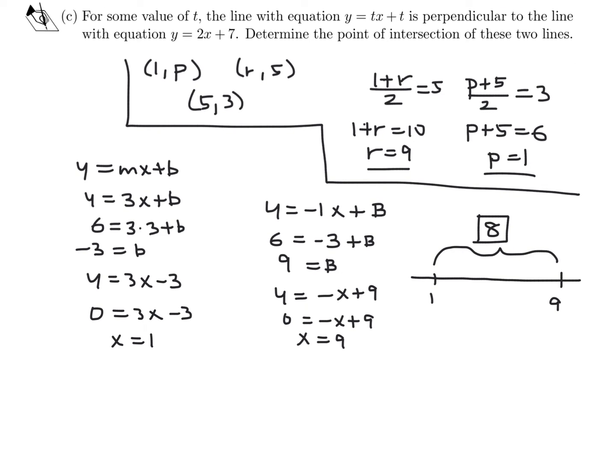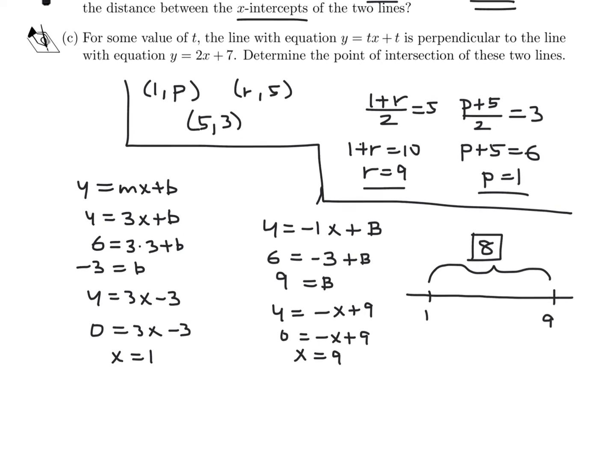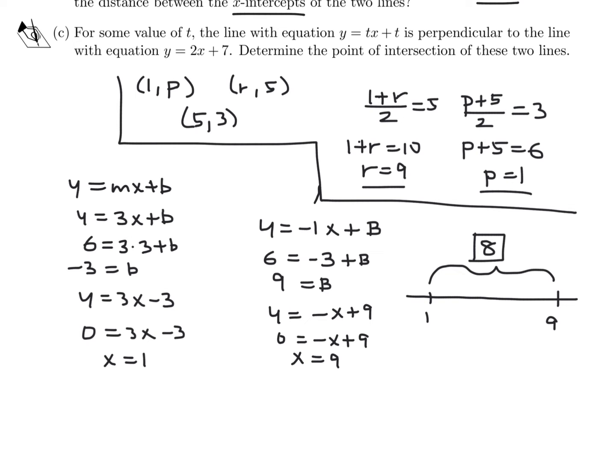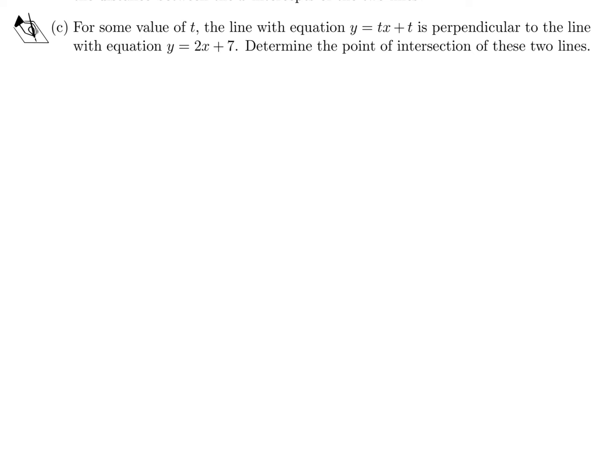Part C. For some value of t, the line with equation y = tx + t is perpendicular to the line with equation y = 2x + 7. Determine the point of intersection of these two lines. They're saying these two lines are perpendicular. If that is the case, their slopes will be negative reciprocals. If you multiply their slopes together, it equals -1. So that means t is basically equal to -1/2. This equation is y = -1/2 x - 1/2.